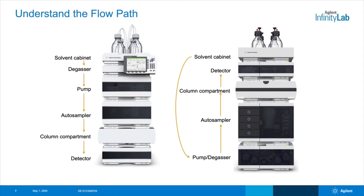This is a typical stack for a 1100, 1200, 1260 system — the classic Infinity systems — and some of the newer 1290 Infinity II systems. The pumps are on the bottom, but again, we're still moving from the solvent down to the degasser and the pump through the auto sampler, column and to the detector. Make sure you take the time to understand and know the flow path of your instrument setup.